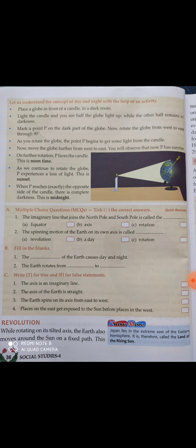This is revolution. While rotating on its tilted axis, the earth also moves around the sun on a fixed path. The earth has a fixed path around the sun — it has never deviated from its path. It is always in its own path only, revolving around the sun and never moving away from its place.